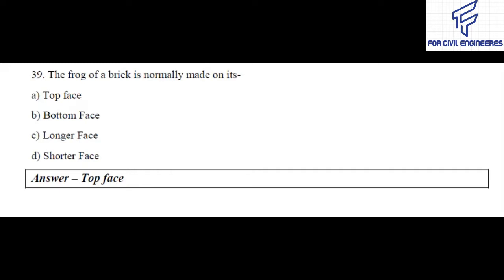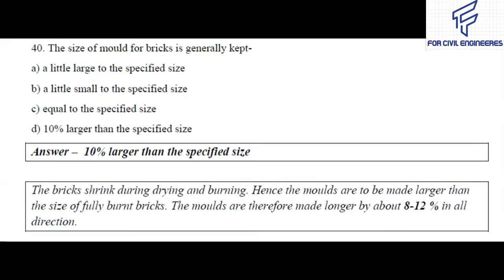Question number 39: The frog of a brick is normally made on its — top face, bottom face, longer face, or shorter face? The right answer is top face. The purpose of providing frog on the top surface of a brick is to form a key for holding the mortar.